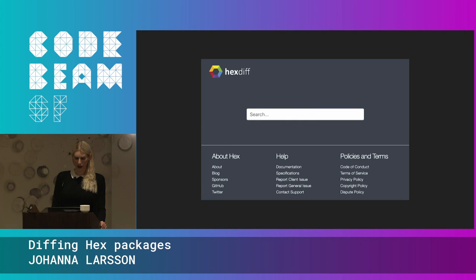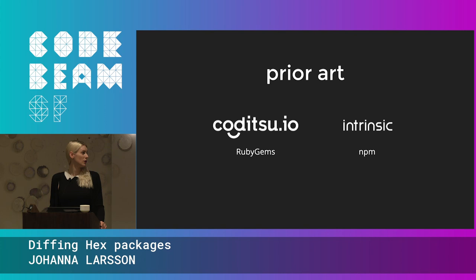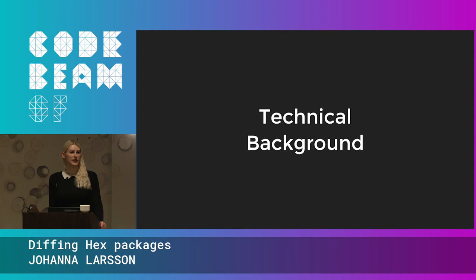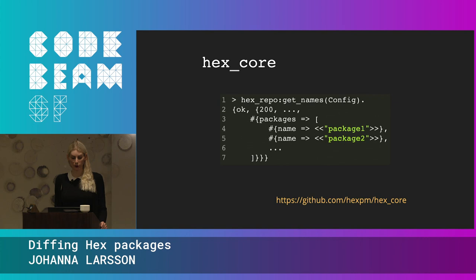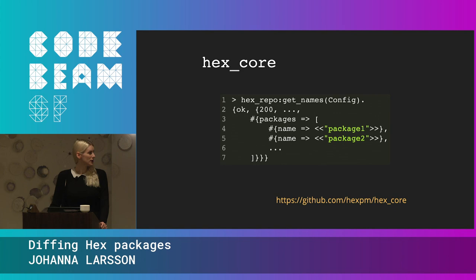I want to mention some prior art for this. My old colleagues made one for RubyGems — Koditsu — and there's also one for NPM. Those are very useful if you're using those languages. Now I want to briefly talk about the technical background of how HexDiff works. First I want to promote the Hex core package, which is really useful — it's a collection of functions that let you interact with Hex: the API, the repo, downloading and unpacking tarballs. Just having access to this package means you can really experiment with the Hex registry.